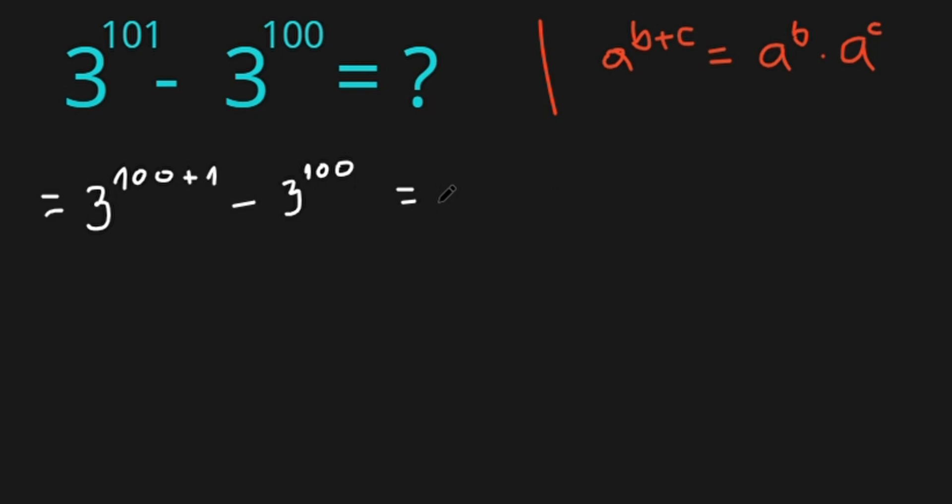In this case a is 3, b is 100, and c is 1. So we have 3 to the power of 100 times 3 to the power of 1, minus 3 to the power of 100.